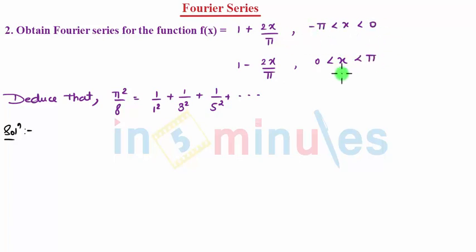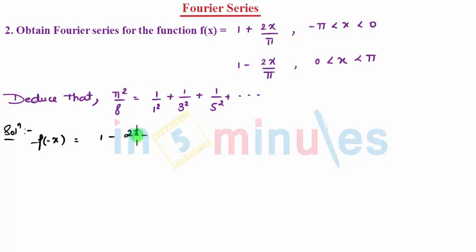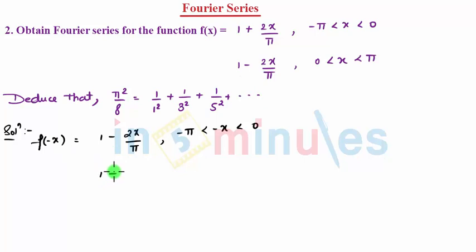This function is discontinuous at 0. First we will be checking f of minus x. If you check f of minus x, the first piece becomes 1 minus 2x divided by pi, for the interval minus pi to minus x and 0. And the second piece becomes 1 plus 2x by pi, where the interval changes to minus x and pi.